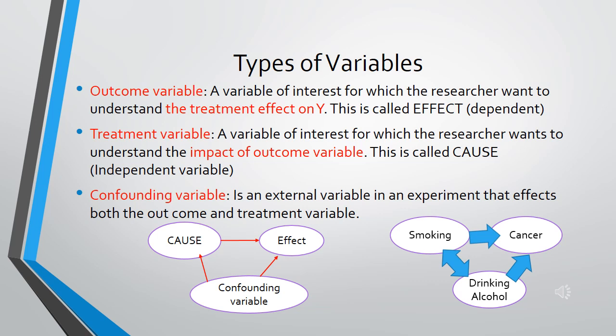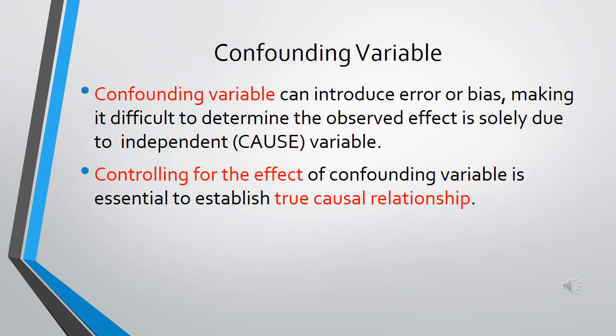One example is cancer — cancer is affected by smoking, and drinking alcohol along with smoking together also influences cancer. Therefore, finding out the relation between the occurrence of cancer and smoking alone will have some impact, but drinking alcohol along with smoking will have a better effect, showing the influence of the confounding variable on the cause variable. Confounding can also introduce error or bias. It becomes difficult to determine whether the observed effect is solely due to the independent variable. Therefore, controlling for the effect of the confounding variable is essential to establish the true causal relationship, and that is possible by using the Mantel-Haenszel test.